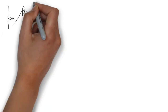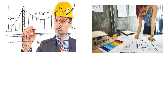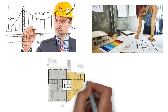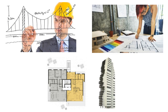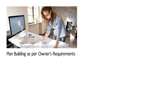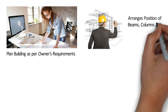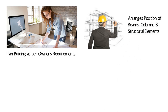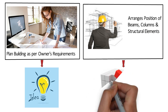Hello friends. Structural engineers and architects can be found working together on building projects. Both are responsible for bringing a design concept from drawing board to completion. However, their tasks are completely different. The architect is the first person to plan the building as per the owner's requirements, then comes the structural engineer who arranges the position of beams, columns and other structural elements from a design point of view. It seems that architects come up with an idea and then make a plan that engineers help them execute.